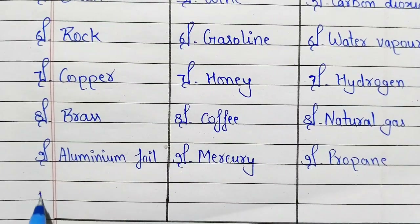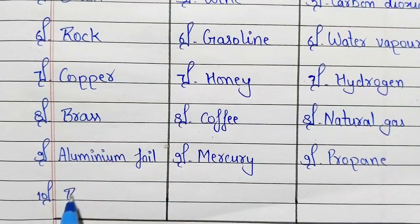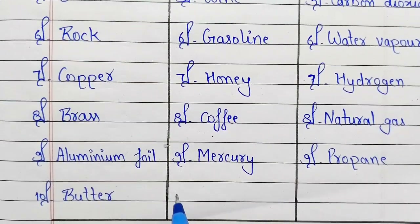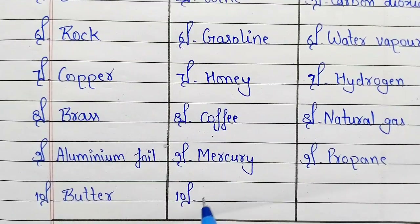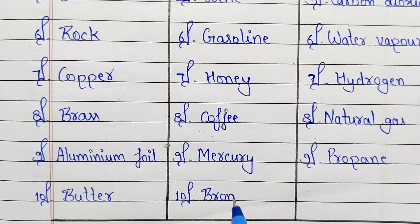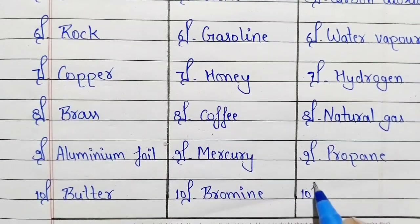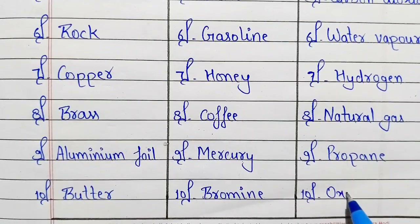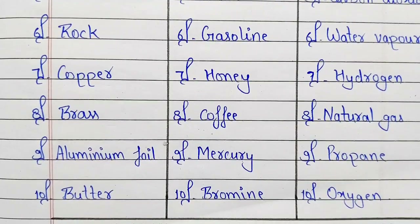Tenth number: solid — butter. Tenth number: liquid — bromine. Tenth number: gas — oxygen.